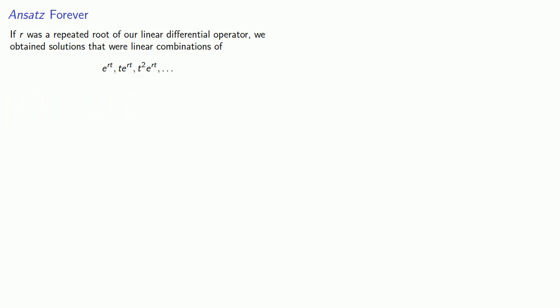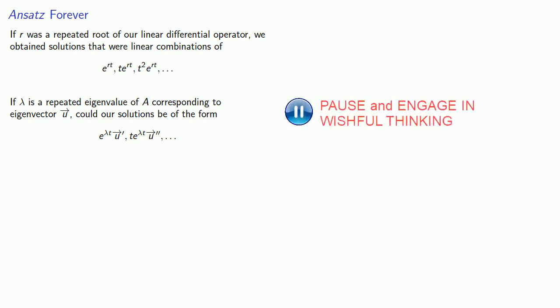So maybe, if lambda is a repeated eigenvalue of A corresponding to eigenvector u, our solutions could be of the form e to power lambda t times some vector, t e to lambda t times some other vector, and so on. Unfortunately, this doesn't work.